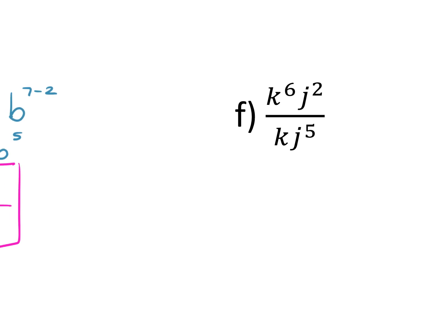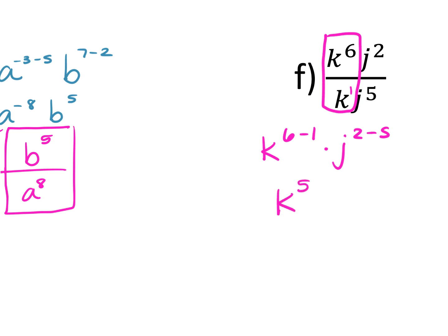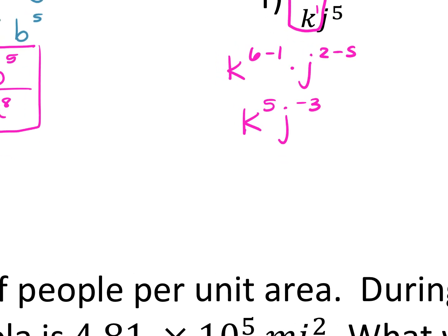Letter F: if there's nothing written, K is to the first power. So you're going K to the 6 minus 1, times J to the 2 minus 5. That's K to the fifth and J to the negative third. You cannot leave a negative exponent — K to the fifth will be your numerator, J to the positive third will be your denominator.